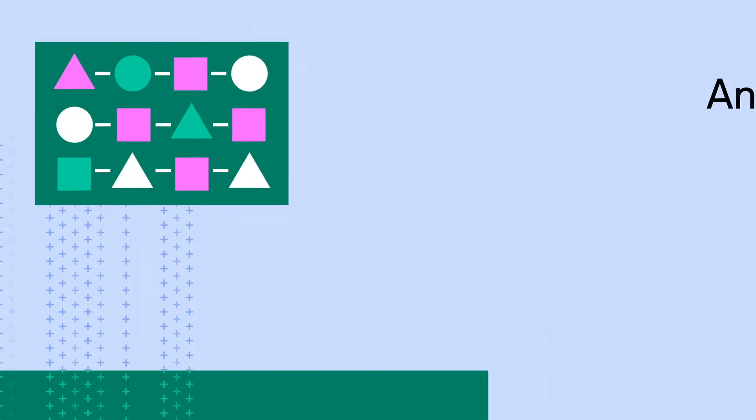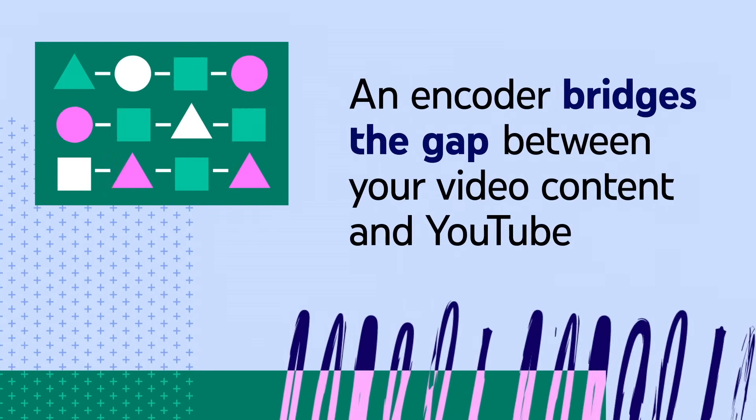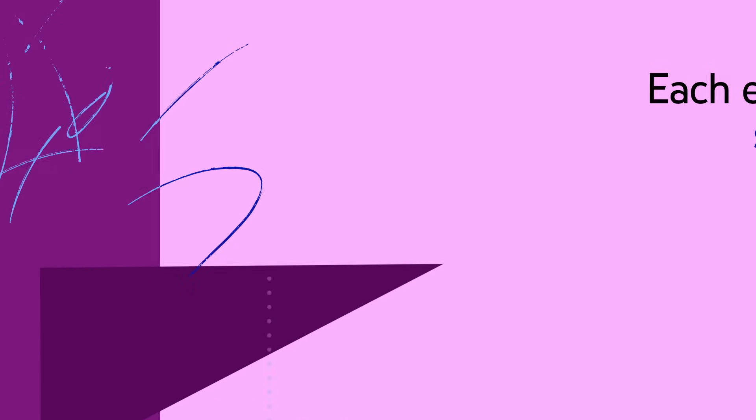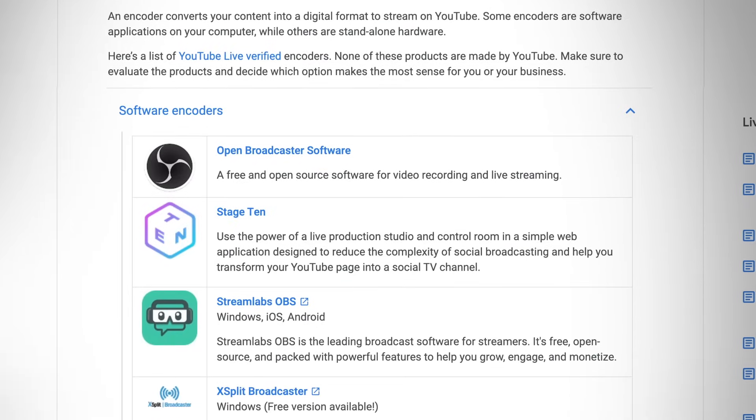Streaming with an encoder is a great option for more highly produced live streams that require a more polished experience for viewers. So what is an encoder? An encoder bridges the gap between your video content and YouTube — it converts your video content into a compressed format that can be sent to YouTube for playback on your channel. Some encoders are software applications on your computer, while others are standalone hardware. Note that although some components are standard, each encoder is slightly different and has different capabilities. For a list of YouTube verified encoders, be sure to check out the Help Center article linked in the description below.